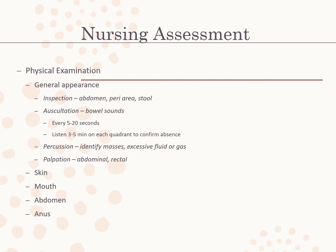Palpation: the abdomen should be soft and non-tender. Abdominal or urinary distension is abnormal and may be associated with reduced peristalsis or retention of stool or urine. Rectal palpation is done to assess the rectal sphincter and examine for masses, lesions, or impacted stool. Digital palpation is also part of the prostate exam, as prostate enlargement from tumor or inflammation can contribute to urinary retention. Percussion: abdominal percussion may identify masses or excessive intestinal gas. Direct fist percussion over the costovertebral angle over the kidney on the back should be painless; sharp pain could signal a kidney infection.